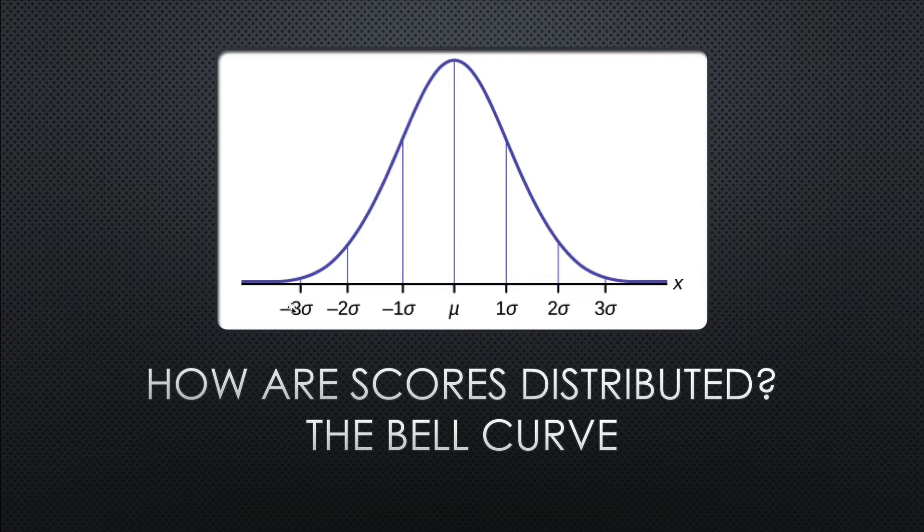We see there's a mean body weight and most people fall around that mean. As we get further away from that average body weight, there's fewer and fewer people. So that's what this is showing here is this normal bell curve. Most of our inferential statistics rely on or assume that data is normally distributed.